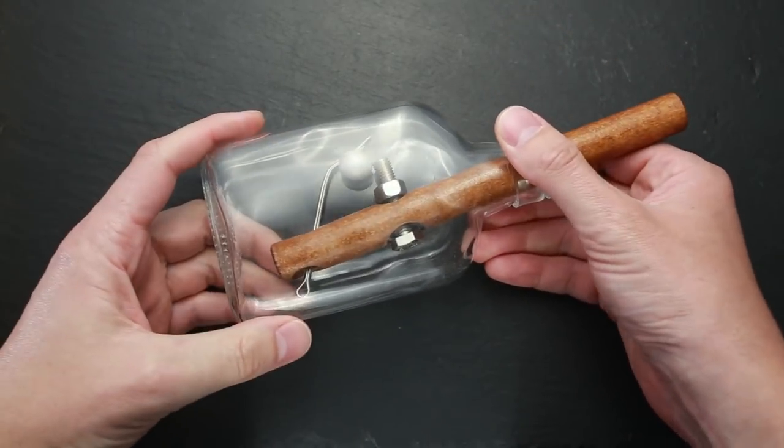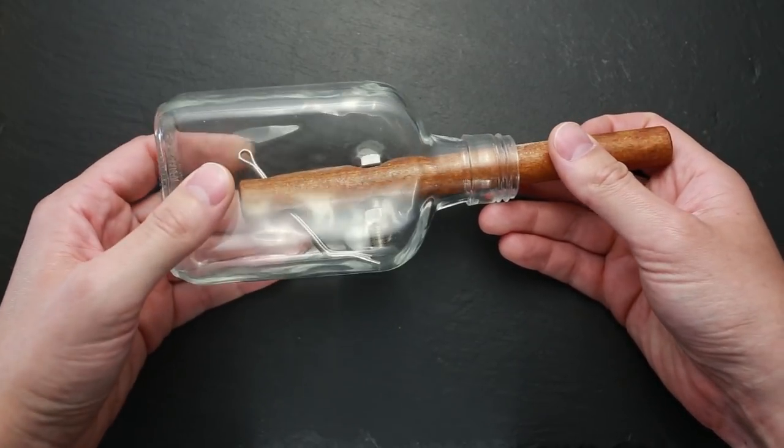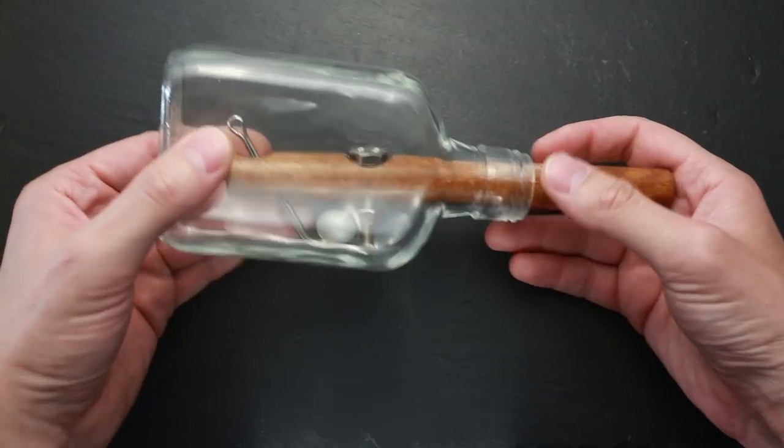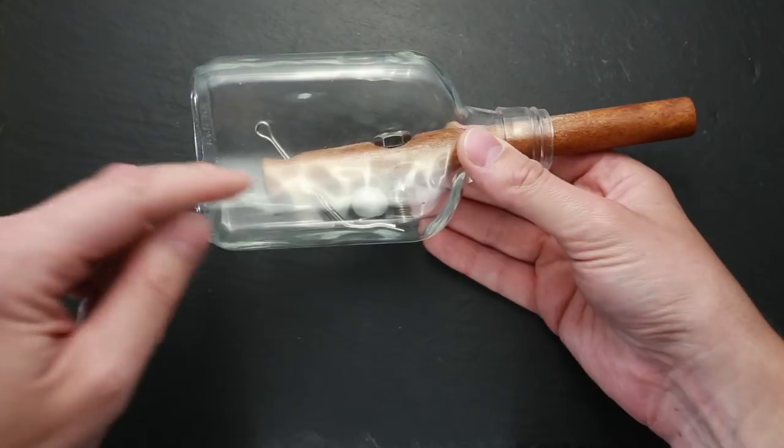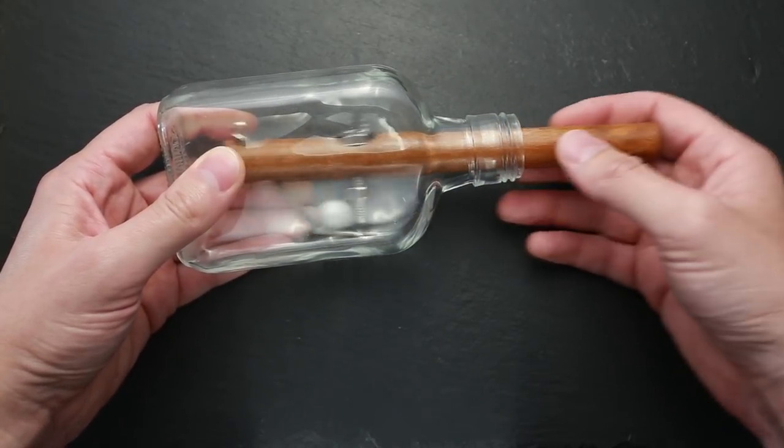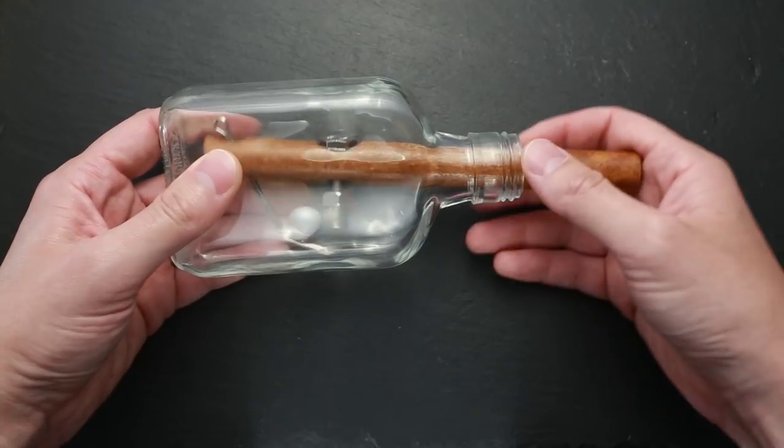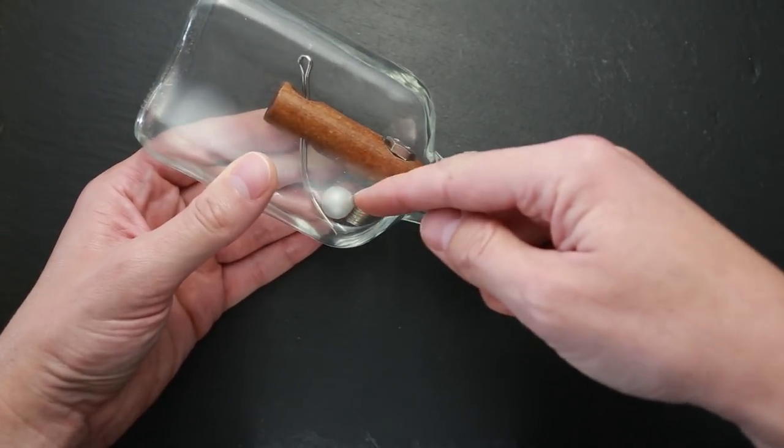So to solve it, you already know, I think you have to unscrew the nut from the bolt, take the bolt out and take the cotter pin out as well. Then you can take the cigar out of the bottle. So first we have to undo the nut.